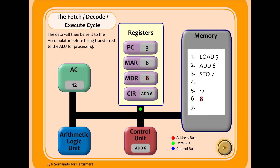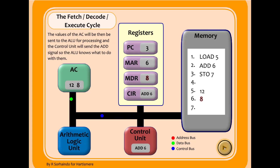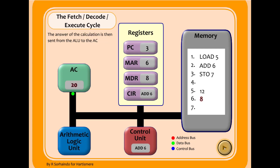The value eight is now stored in the memory data register and gets taken to the accumulator. The arithmetic logic unit handles the calculation: along with the control bus instruction to add the numbers together, twelve is added to eight. The accumulator now holds the value twenty. The instruction 'add 6' has been fully executed.